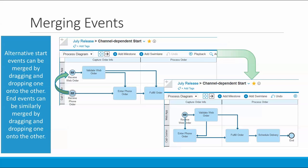Here's an example of how we would merge flows by merging alternative start events. You can see in this diagram that we've got two different start events that kick off this process depending on which trigger is received. If I drag the lower start event and drop it onto the start event in the upper swim lane, the one that I drag will vanish and its flow will be automatically connected to the remaining start event, as you can see here in the diagram on the lower right-hand side of the chart.